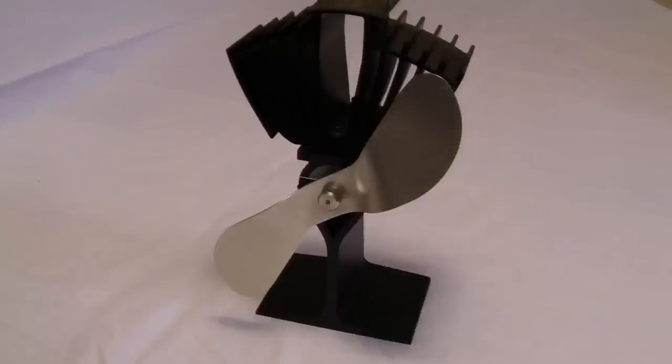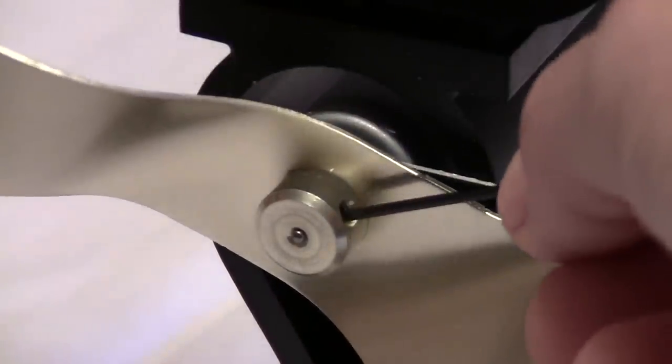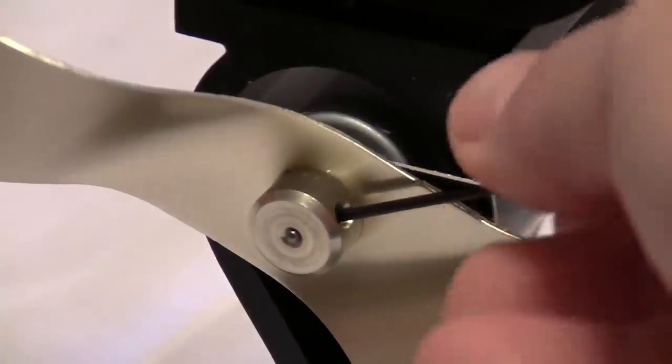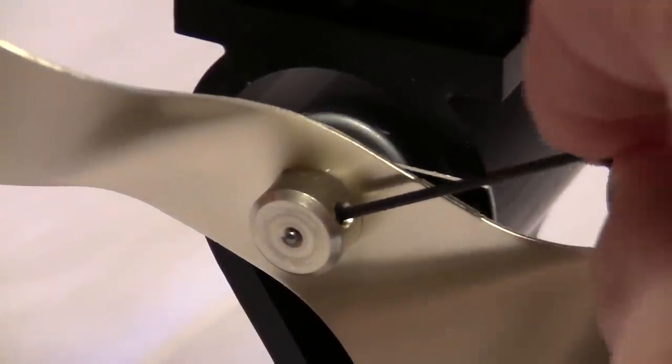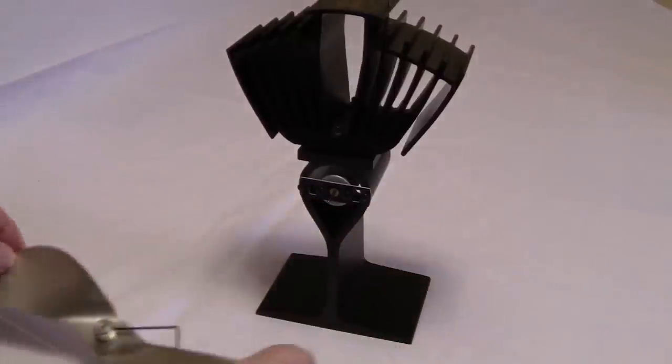Now the first thing we have to do is remove the blade. So we're going to do that with this allen key right here. We're going to turn the blade and stick the allen key into this little slot right there. I'm going to turn that and then we can remove the blade and put that aside.